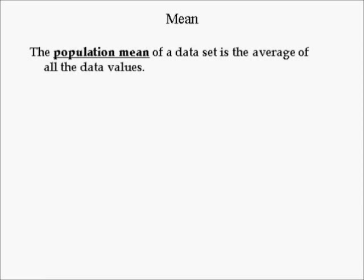The population mean of a data set is the average of all data values. For example, if we had the people, money, and time to ask everyone who worked in America last year how much money they earned, we would have to add up roughly 140 million workers' earnings and then divide by 140 million. We use the Greek letter mu to denote the population mean — convenient because mu and mean both begin with the letter M.